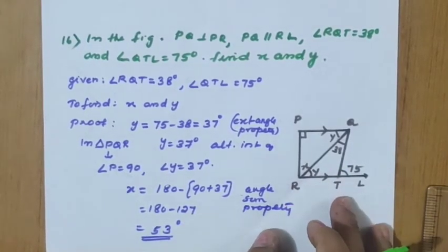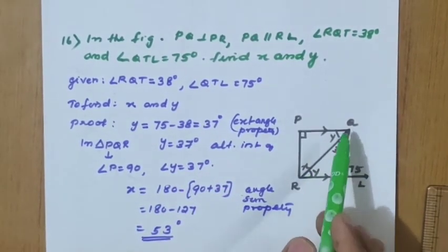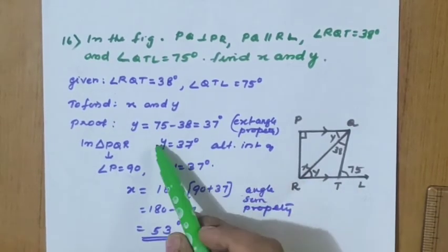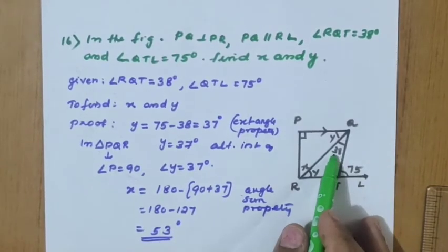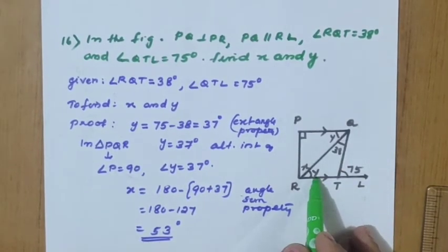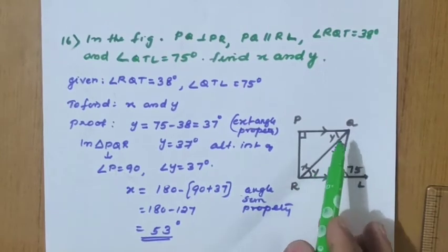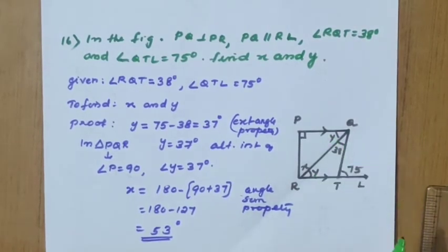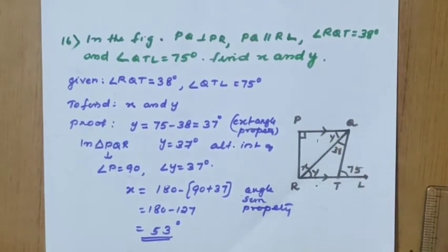For such questions with all values given in the diagram, we can avoid drawing it again. First we calculate y: 75 minus 38 gives y by exterior angle property, so y equals 37. This same y value applies at the alternate interior angle position, so y equals 37 there as well.